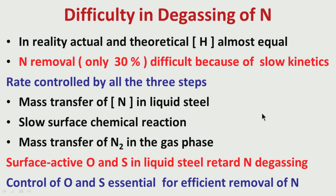Though theoretically we know that nitrogen removal is possible to a great extent, in reality because of this kinetics, only about 30 to 40 percent nitrogen removal is possible. This can be enhanced when we have very low amounts of dissolved oxygen and sulfur in liquid steel. Therefore, deoxidation and desulfurization are essential steps and prerequisites for degassing, particularly for nitrogen.